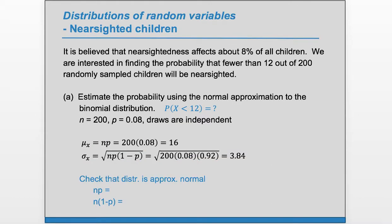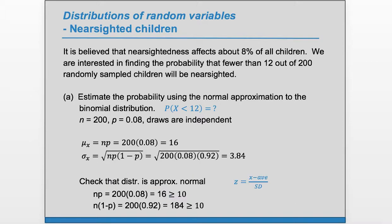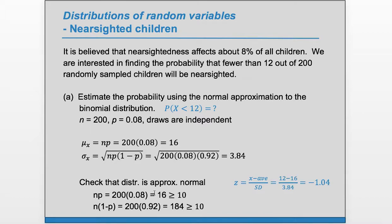Now let's check that we can use normal approximation on this binomial distribution. We need n·p and n·(1−p) to both be at least 10. Here n·p = 200 × 0.08, which is greater than or equal to 10, and n·(1−p) is also greater than or equal to 10. So we can proceed to find our z-score. The value of interest x is 12, and we subtract the mean and divide by the SD, giving us 12 minus 16 over 3.84.